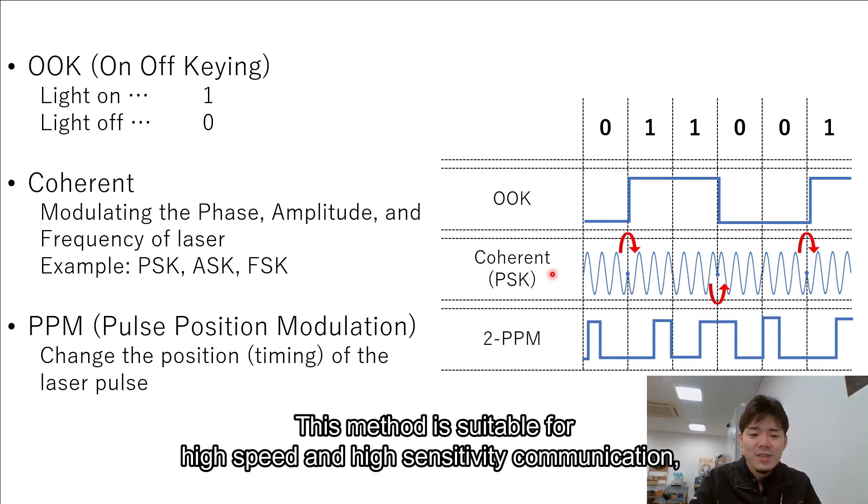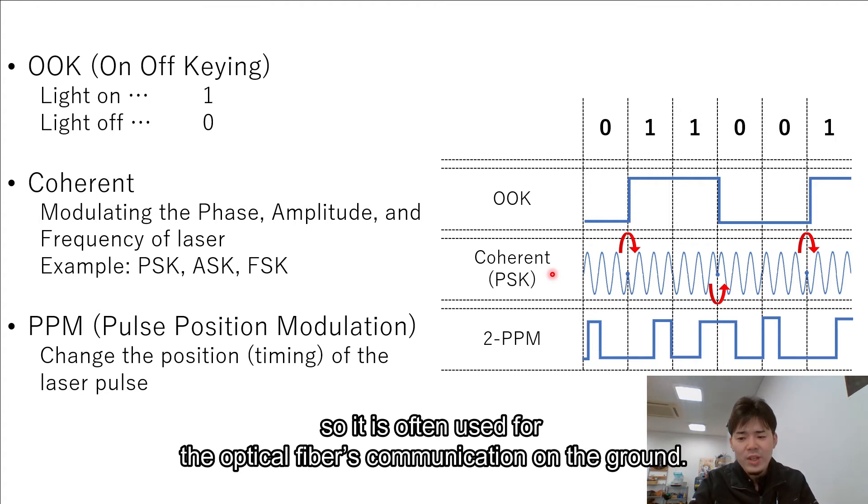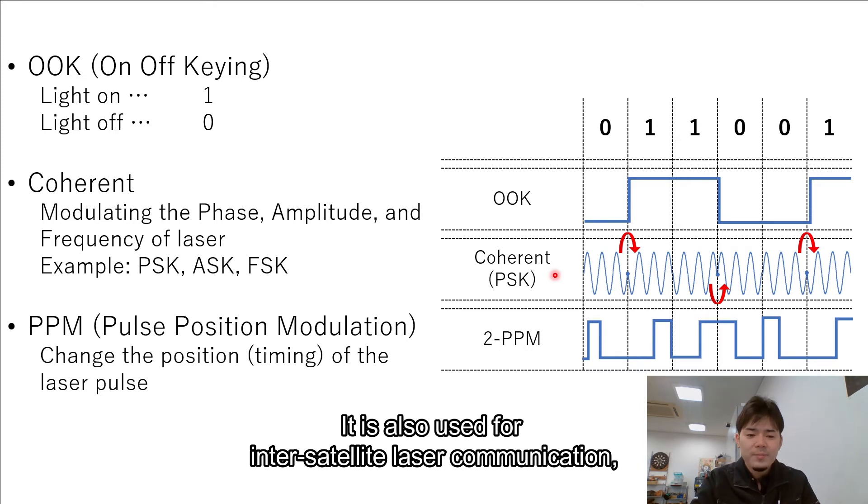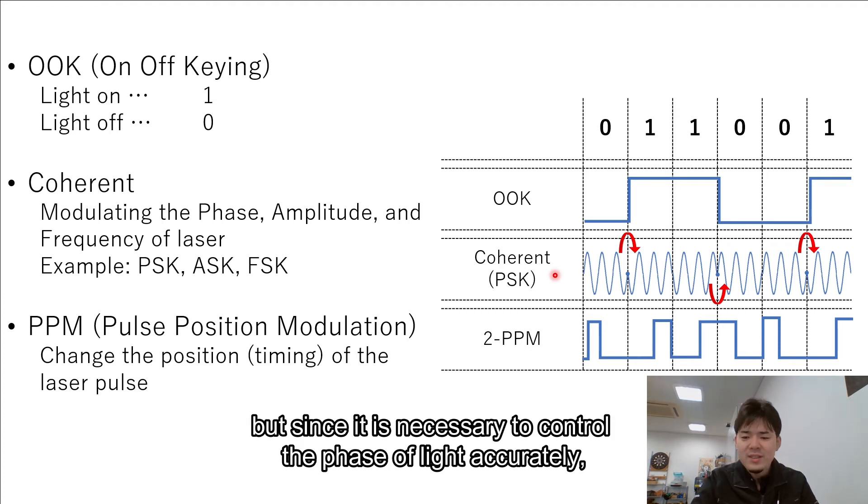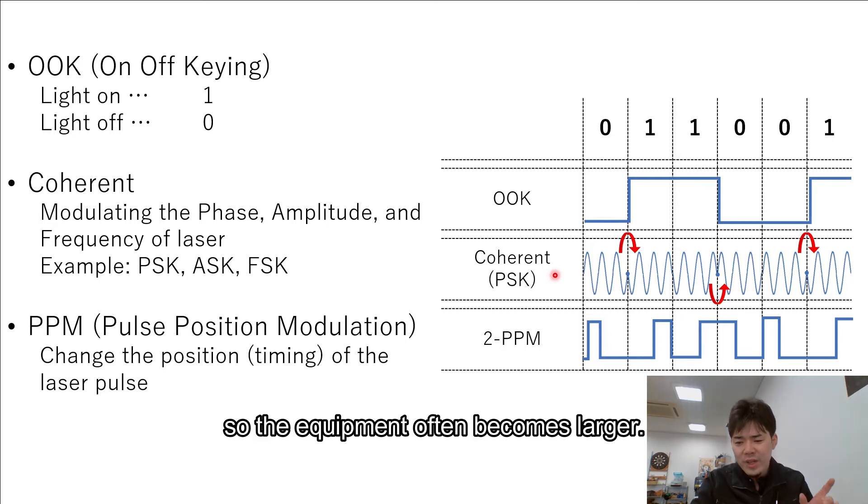This method is suitable for high-speed and high-sensitivity communication, so it is often used for optical fiber communication on the ground. It is often used for inter-satellite laser communication, but since it is necessary to control the phase of laser accurately, the equipment often becomes larger.